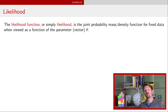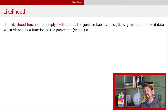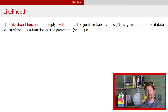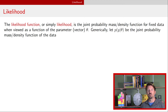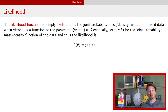Now the likelihood function, or more simply the likelihood, is the joint probability mass or density function for a collection of fixed data as a function of the parameter vector theta. Generically, we're going to write this joint probability mass or density function as P(y | theta). And therefore, the likelihood, if we write it as L(theta), is just equal to this P(y | theta).